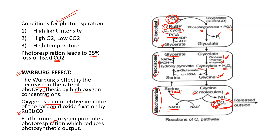Plants surviving in hot and dry conditions — where C3 plants must perform the C2 cycle, i.e., photorespiration — have developed another strategy: the C4 pathway. We will study that pathway in the next video. Thanks for watching, and I hope this video helped you understand why C3 plants perform the C2 cycle and what the C2 cycle is.